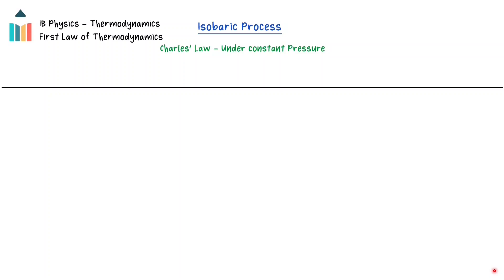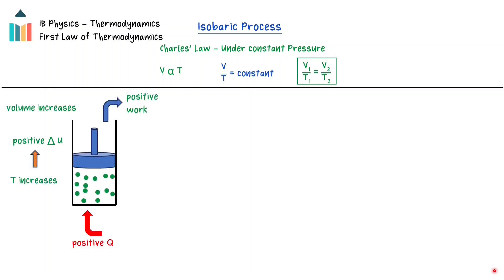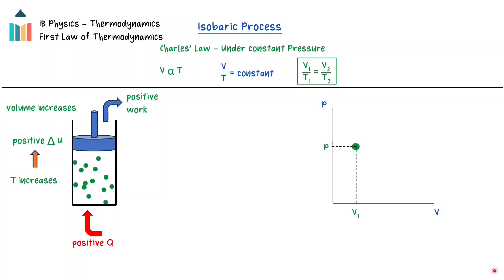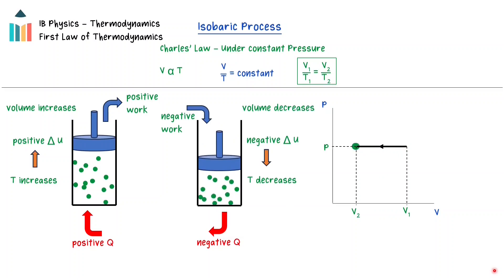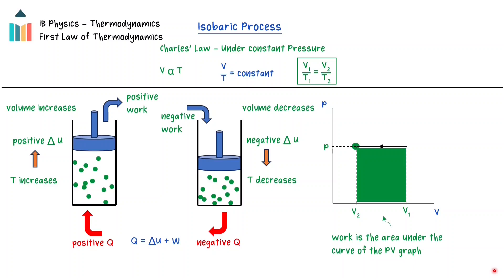In an isobaric process, the pressure of the ideal gas is kept constant. Charles' law states that under constant pressure, the volume of an ideal gas is directly proportional to its absolute temperature. When thermal energy enters the system, the internal energy and temperature increase, the volume increases, and positive work is done by the gas on the surroundings. On a pressure-volume graph, an isobaric process is a horizontal line. When thermal energy leaves, the volume decreases and the work is negative. The work done is easily calculated as pressure times the change in volume.